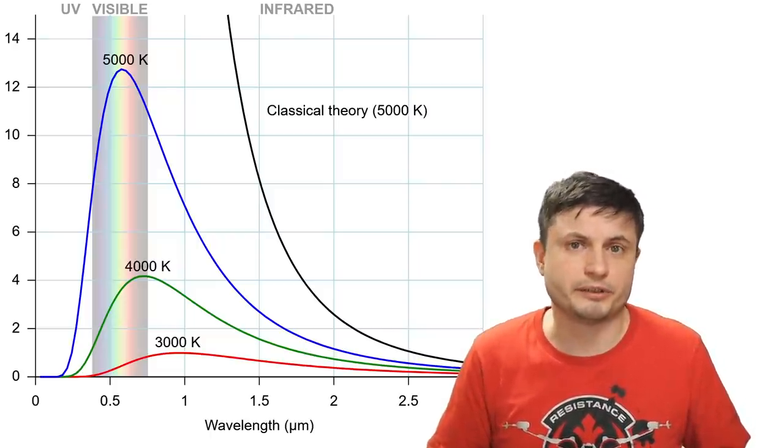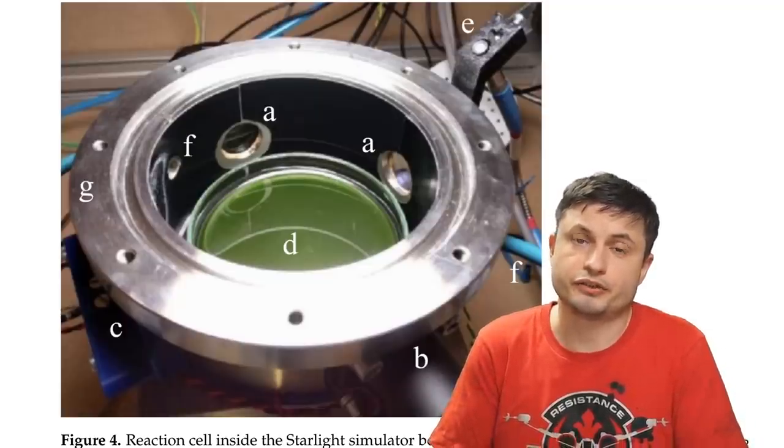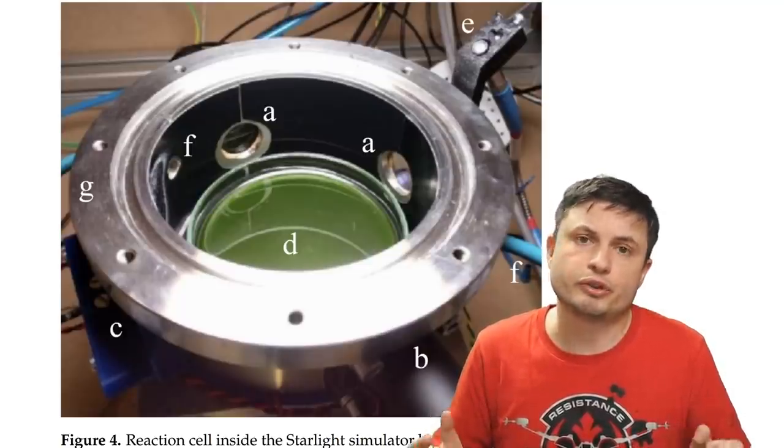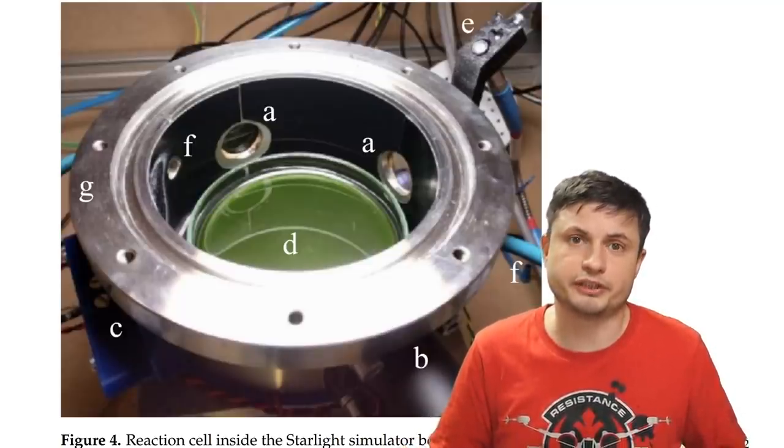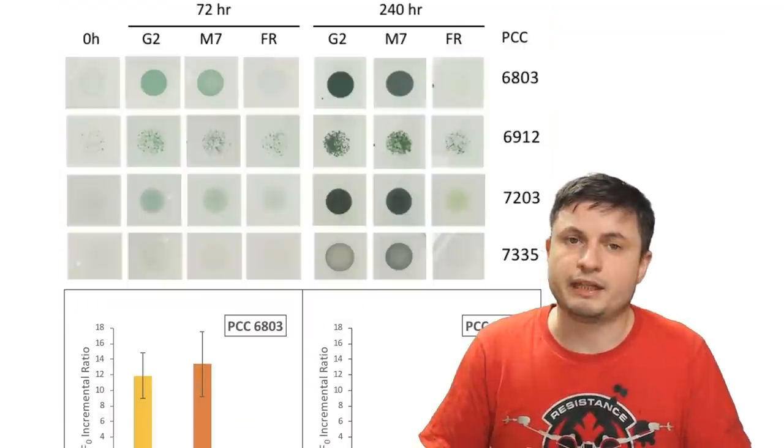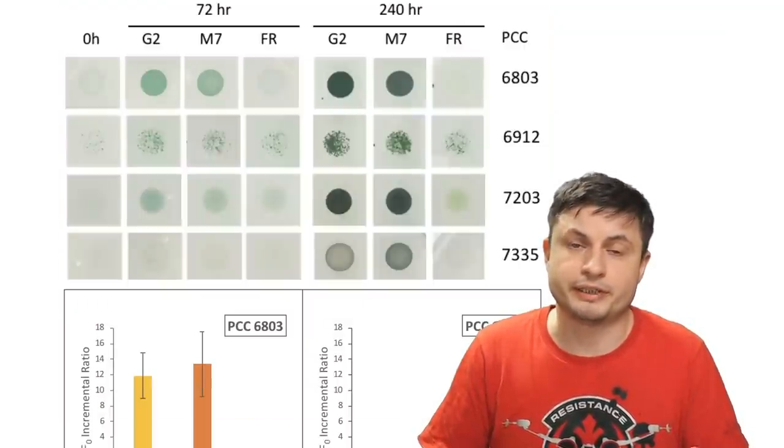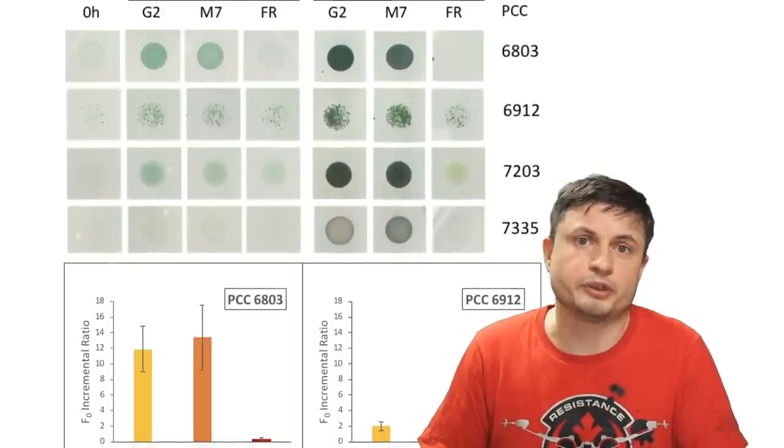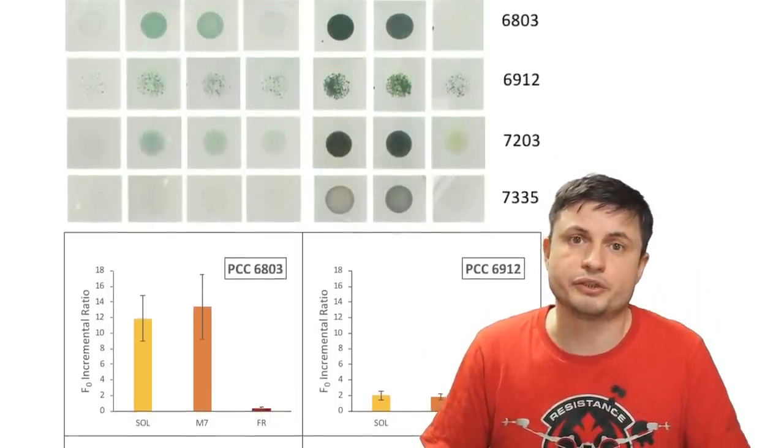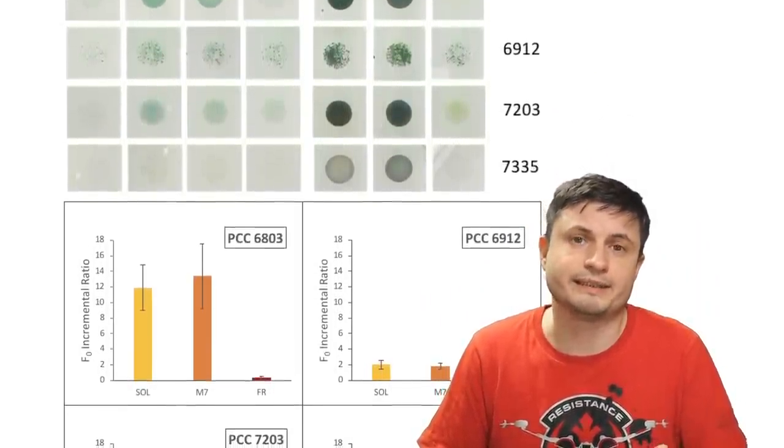And this is why this experiment and this particular study are so interesting, because they were able to create these artificial conditions that we would expect around a typical red dwarf. And they were then able to test these conditions scientifically by varying certain parameters and also by using certain organisms that we know can exist in these extreme conditions. Which also by the way includes extreme radiation and potential flare conditions that we can usually find around a typical red dwarf.